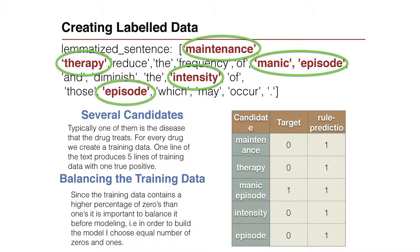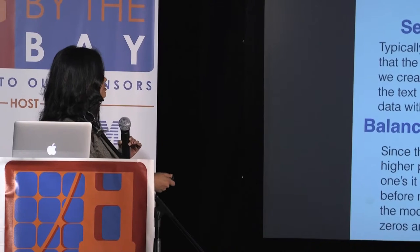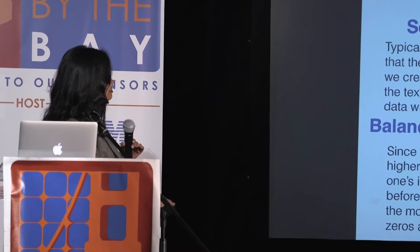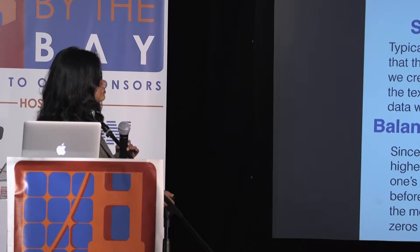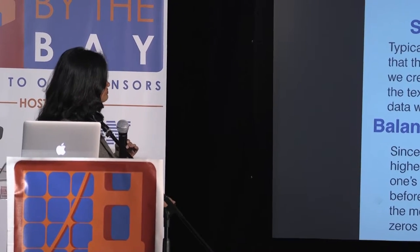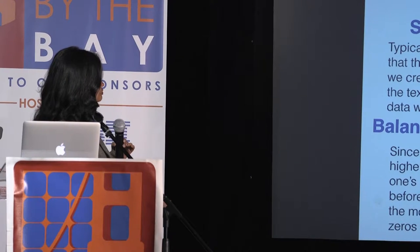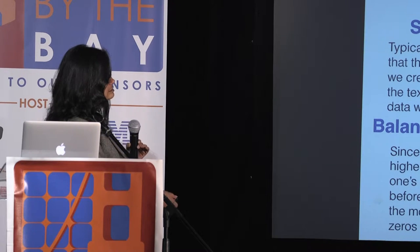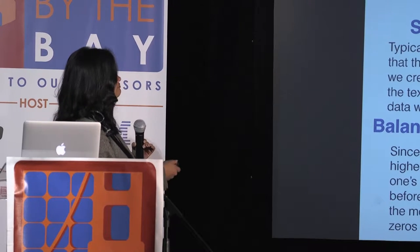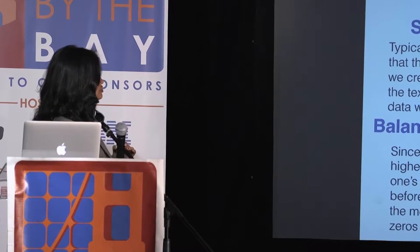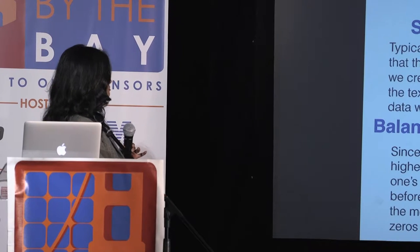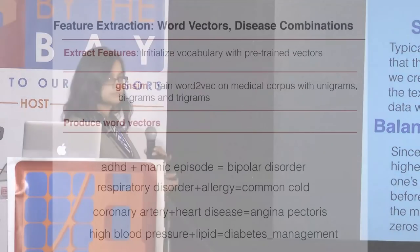This is a typically lemmatized sentence, and these are the nouns and noun phrases that came out of it. You see there are lots of nouns apart from diseases — maintenance, therapy, intensity, episode. When you create a training set, these are your candidates, and you use the training data to identify which ones are actually diseases. A typical thing that happens is for every sentence you'll find one disease the drug treats and a lot of nouns that are just zero. So it'll be a very imbalanced model — very few positives and mostly negatives — so it's important to balance your training data to have equal numbers of positives and negatives.